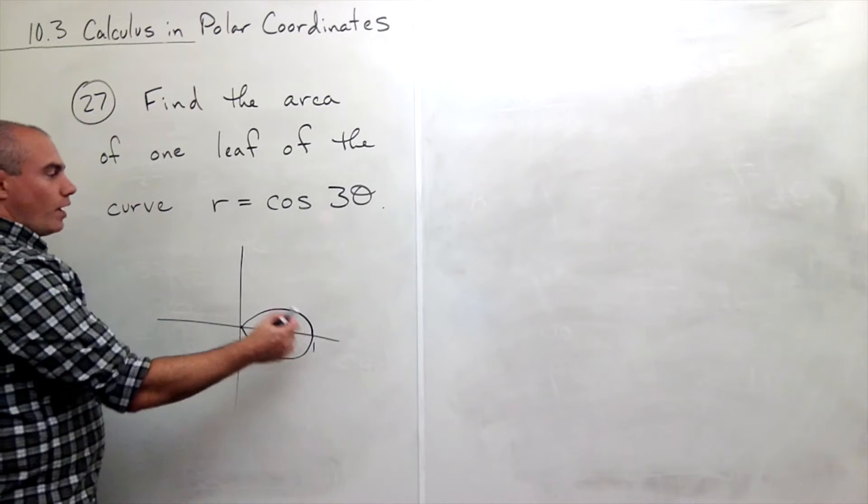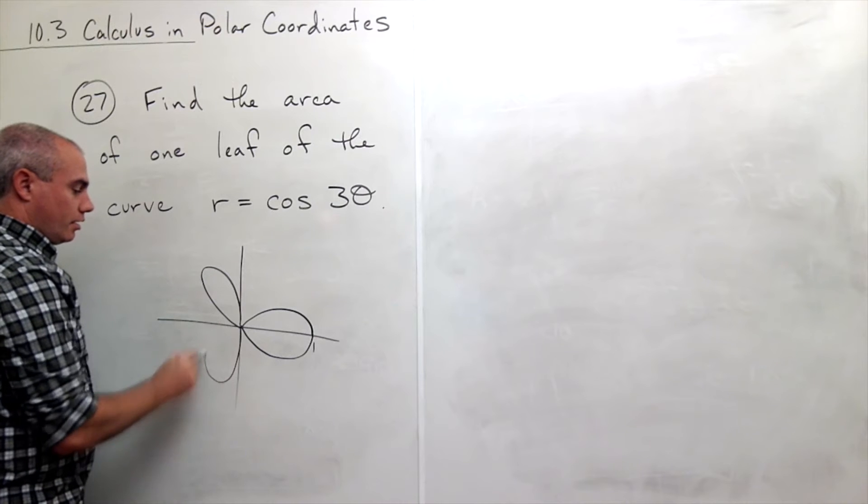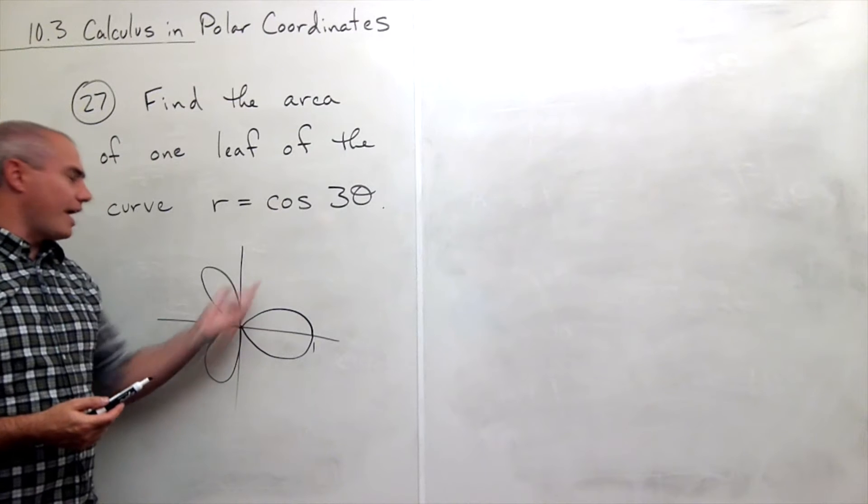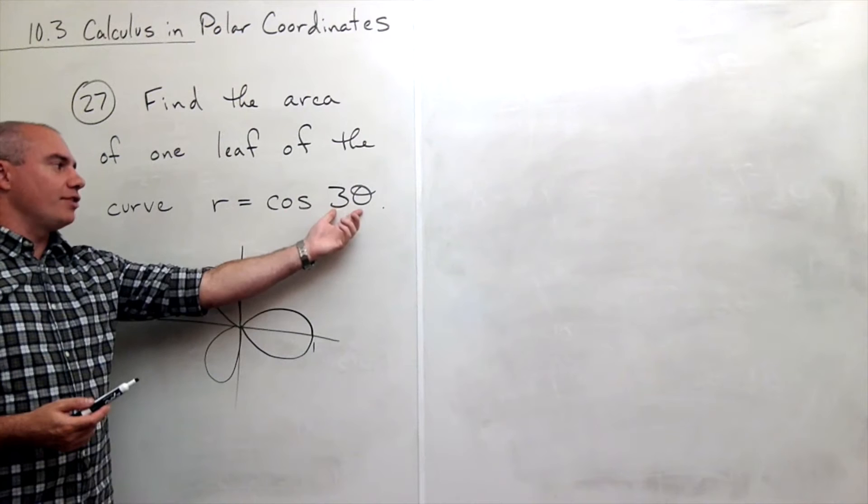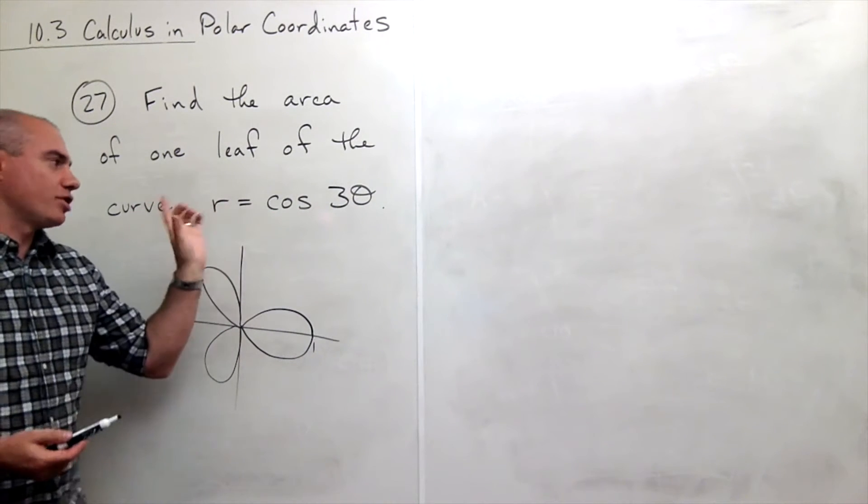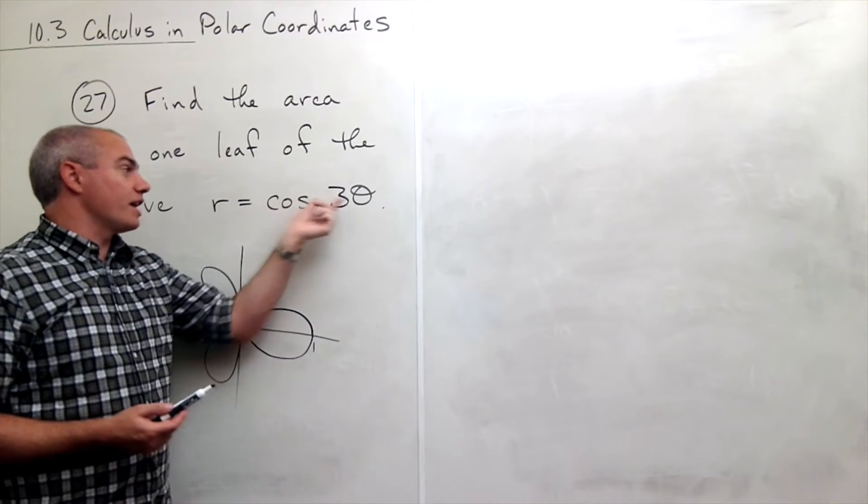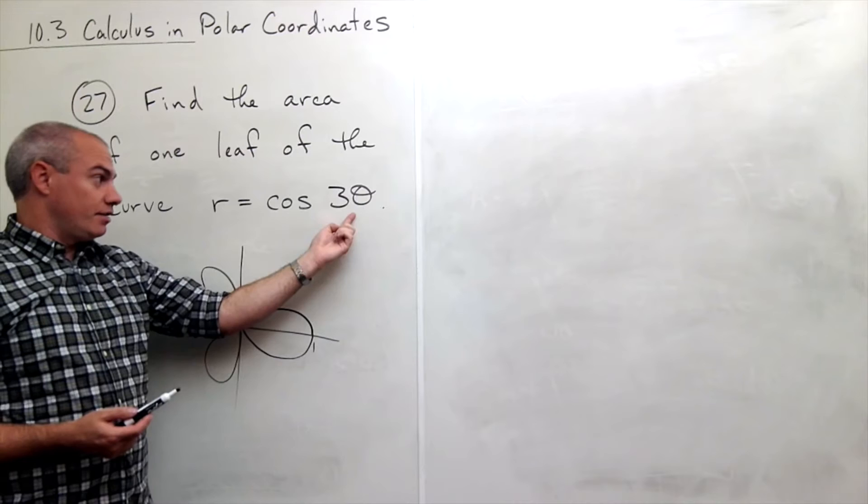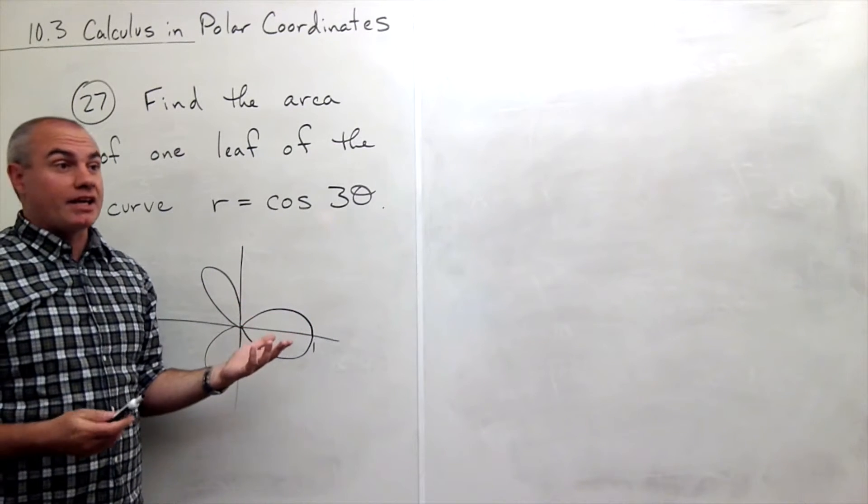Where are the other two leaves? Well there are three of them so they're sitting at thirds so there's one over here and there's one over here. And if we wanted to figure out what are the angles of the other two leaves then we just ask the question well what values make cosine of three theta become one? Well zero does it. What else makes it one or possibly negative one?